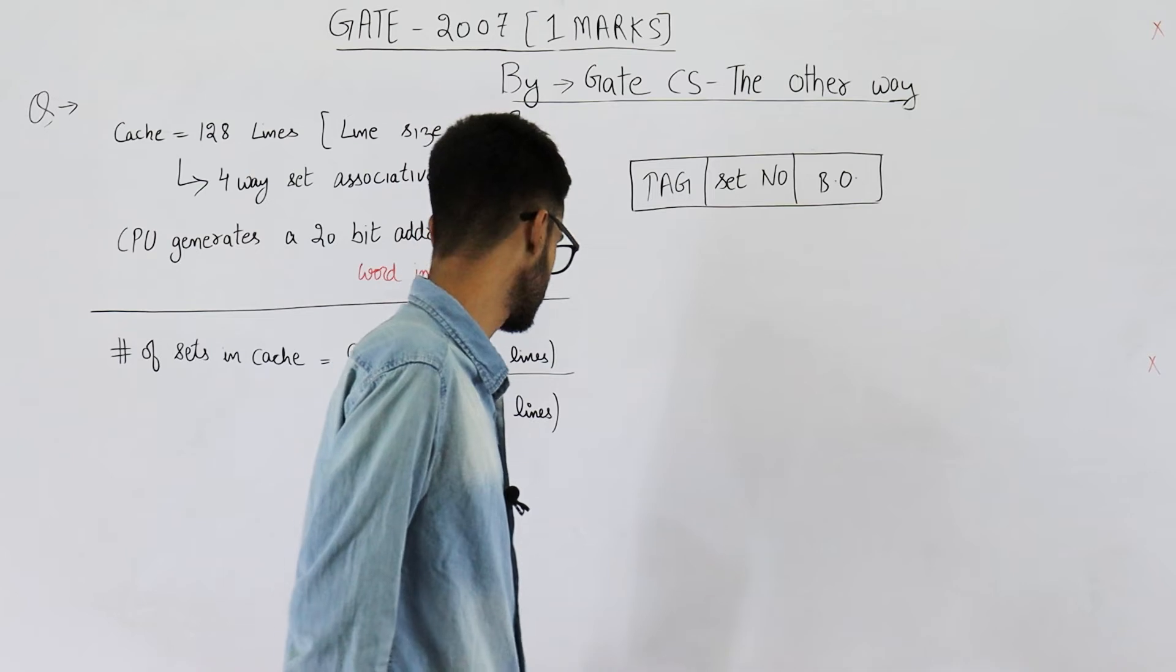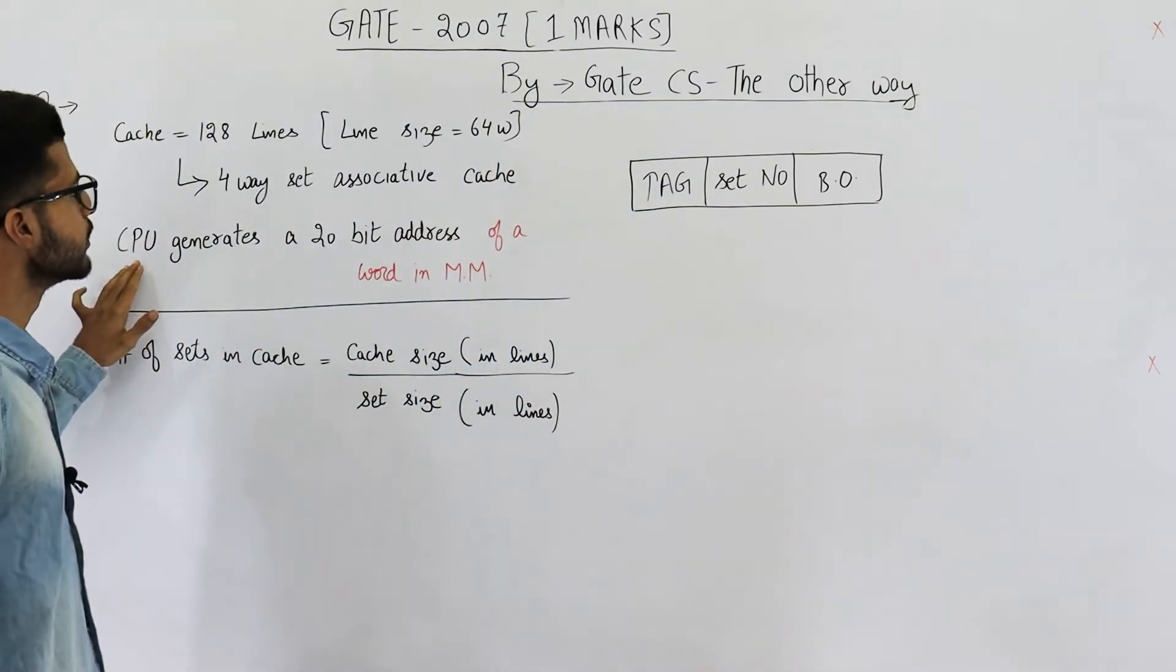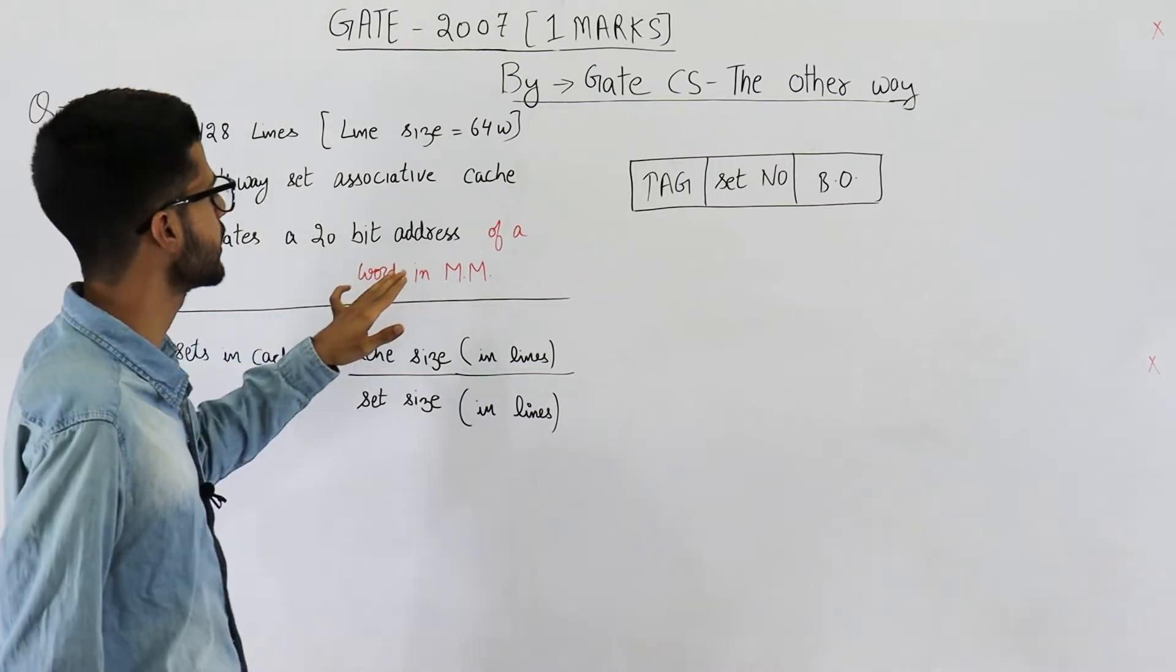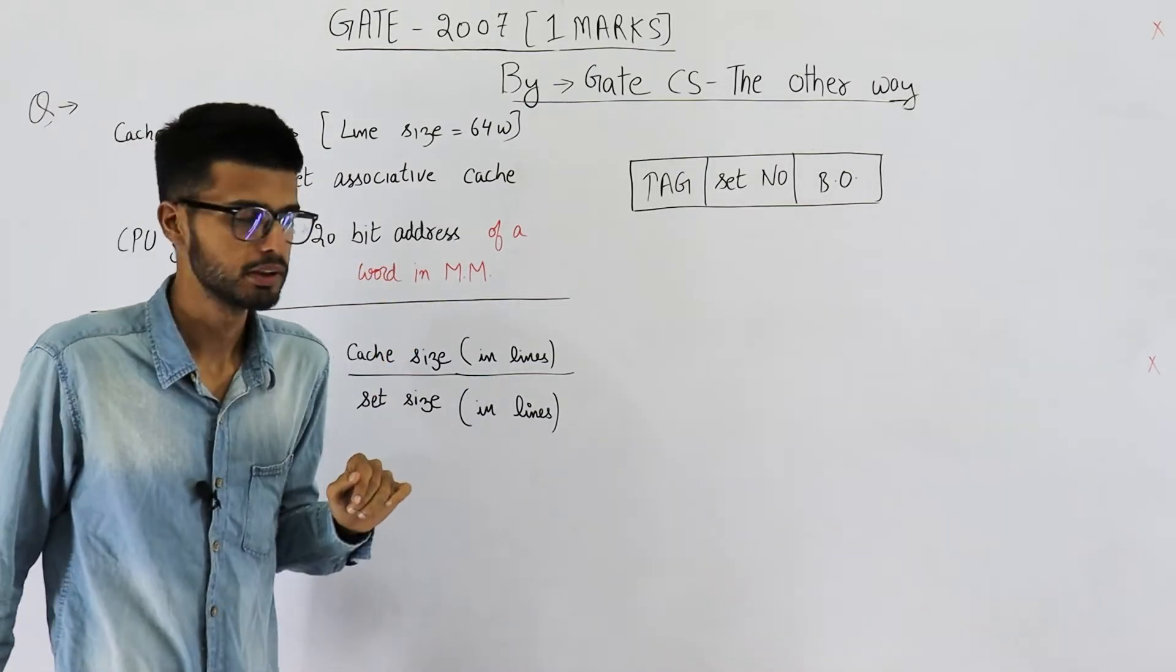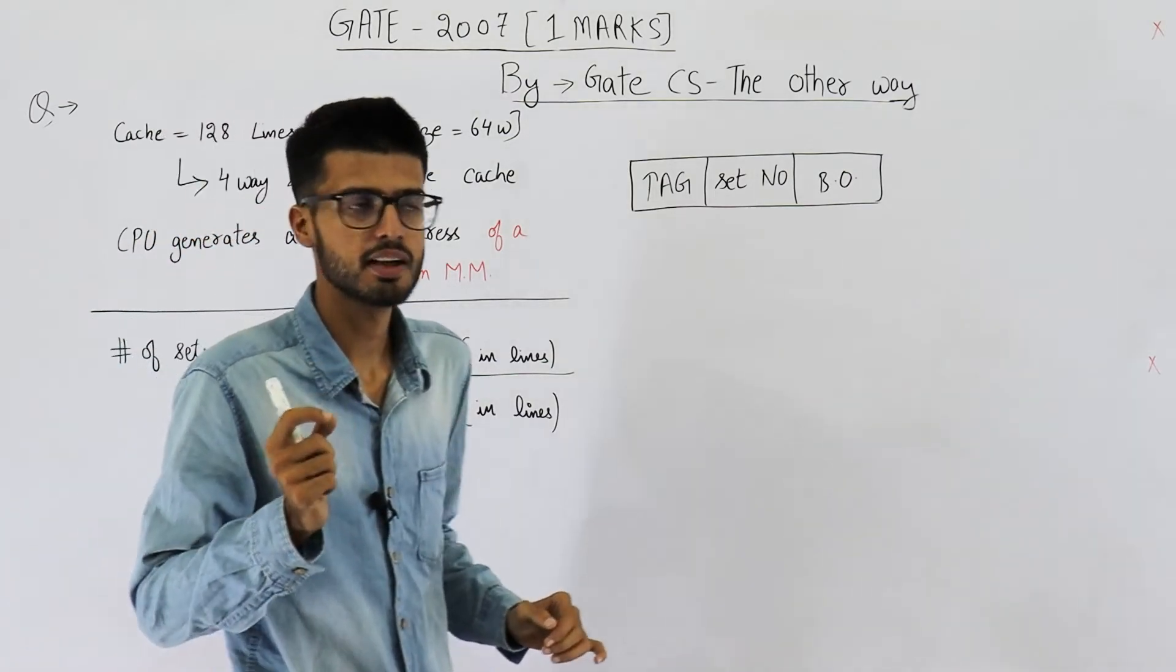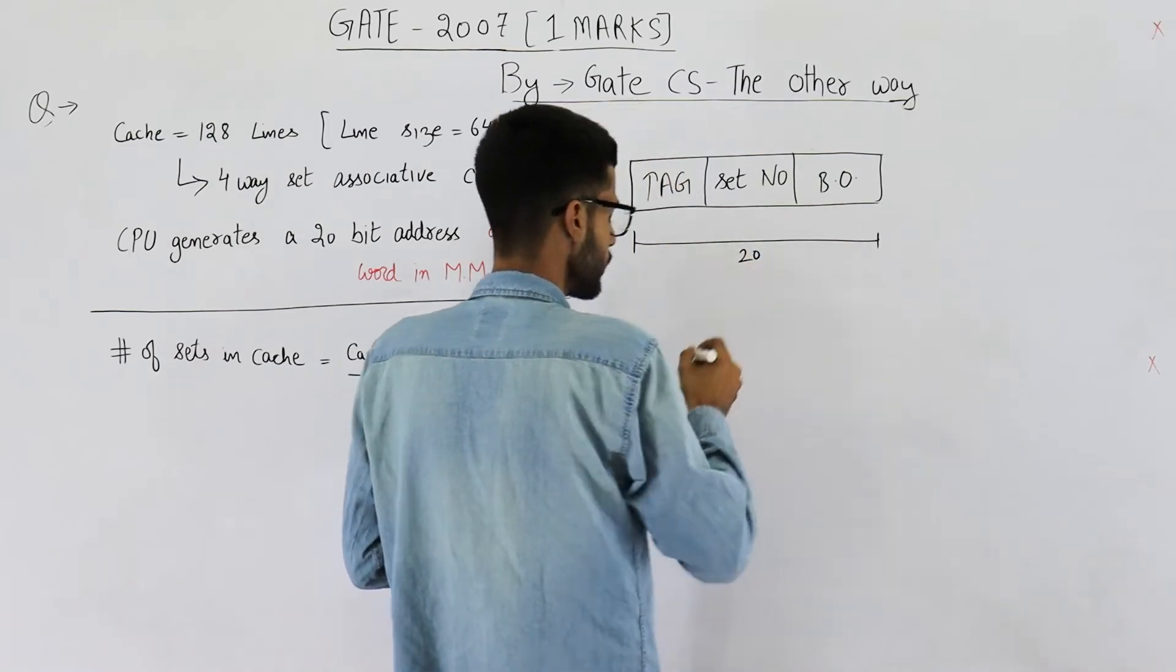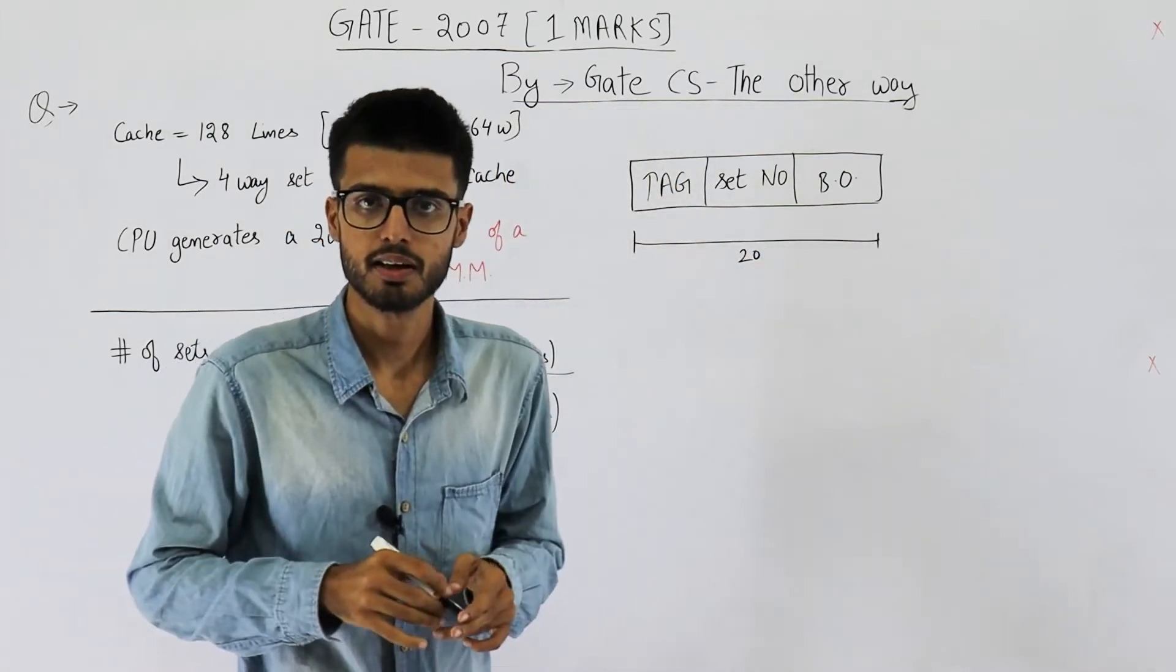You need to find the split of a physical address. They are saying CPU generates a 20-bit address of a word in main memory. This is the important point. That means this is a physical address. So physical address is 20-bit. Don't confuse it with a virtual address.